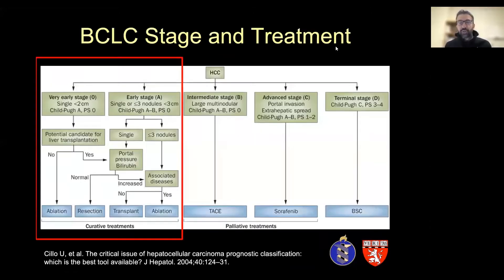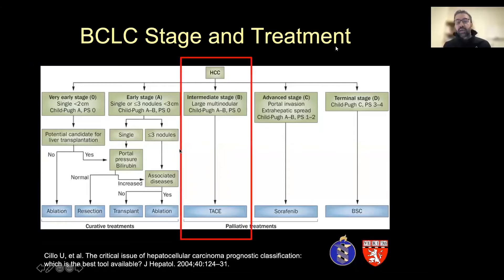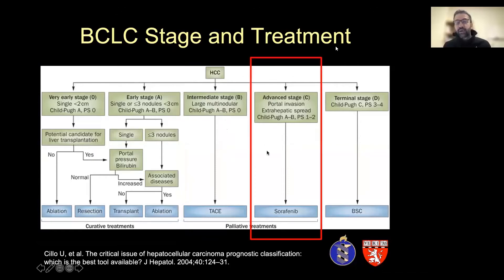In the final two minutes, briefly: HCC and cholangiocarcinoma are the two primary tumors treated with local regional therapies. For HCC, the BCLC staging is well-known — transplantation, ablation, or resection are potentially curative for stage A disease; chemoembolization is the mainstay for stage B disease; and systemic therapy or radioembolization is the best therapy for stage C disease.